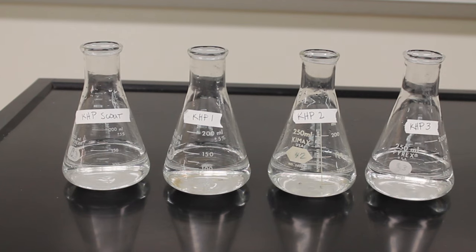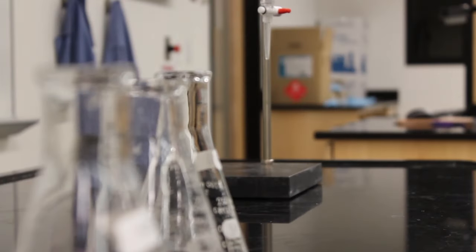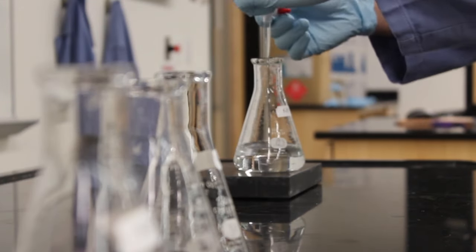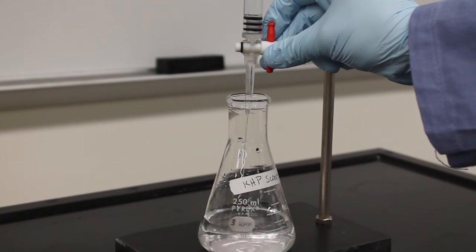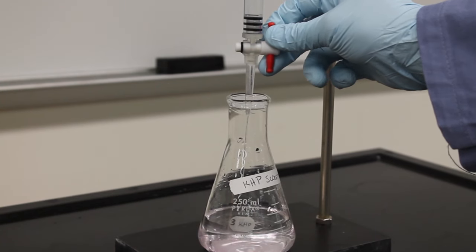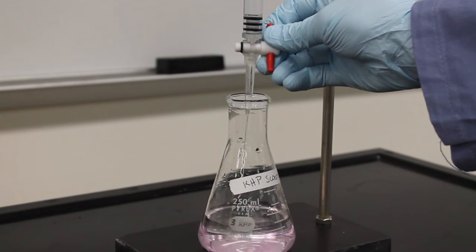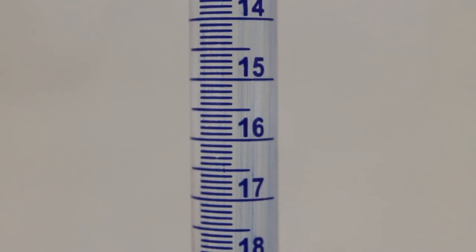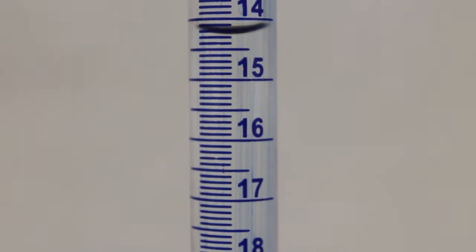A scout titration is completely optional. This titration is typically done pretty fast, and it does not need to be super precise. The point of a scout titration is to get a rough estimate of about how much titrant you are going to need to add to the rest of your solutions. A scout titration will only be valuable if the masses of KHP are close to each other.